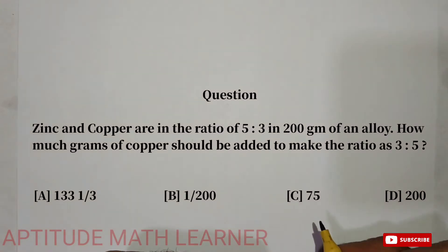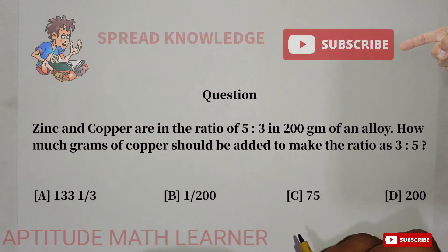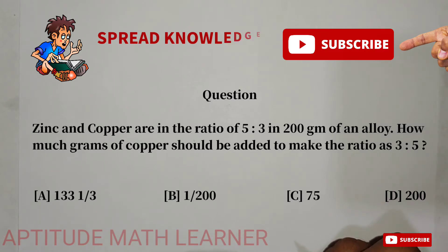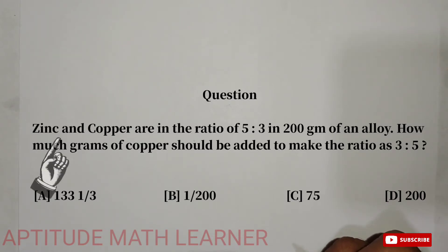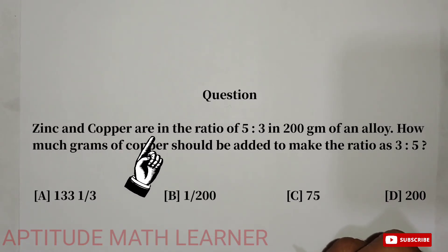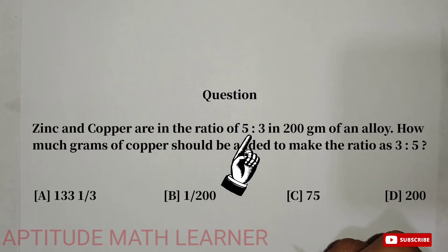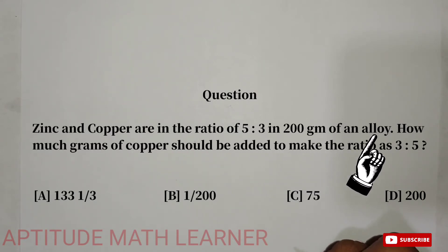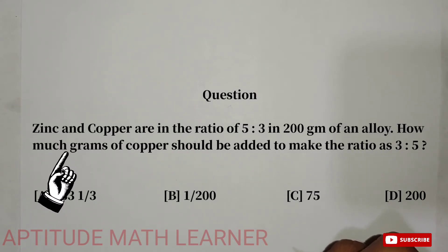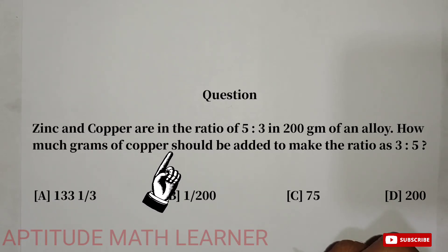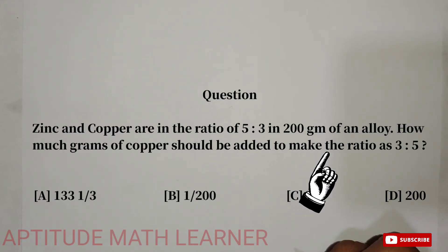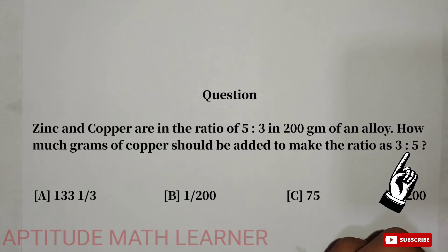Welcome to our YouTube channel Aptitude Math Learner. Today's question is: zinc and copper are in the ratio 5:3 in 200 grams of an alloy. How many grams of copper should be added to make the ratio 3:5?